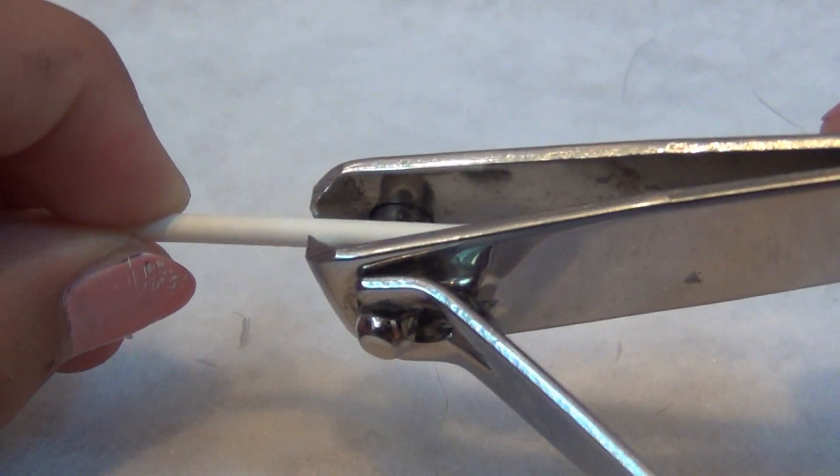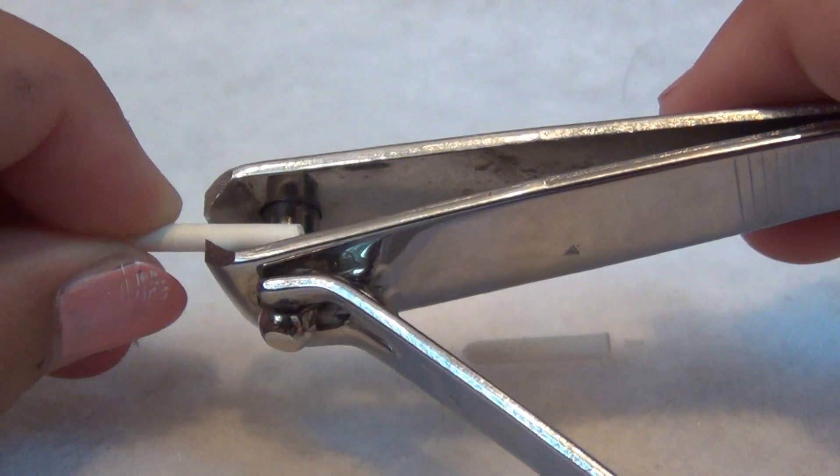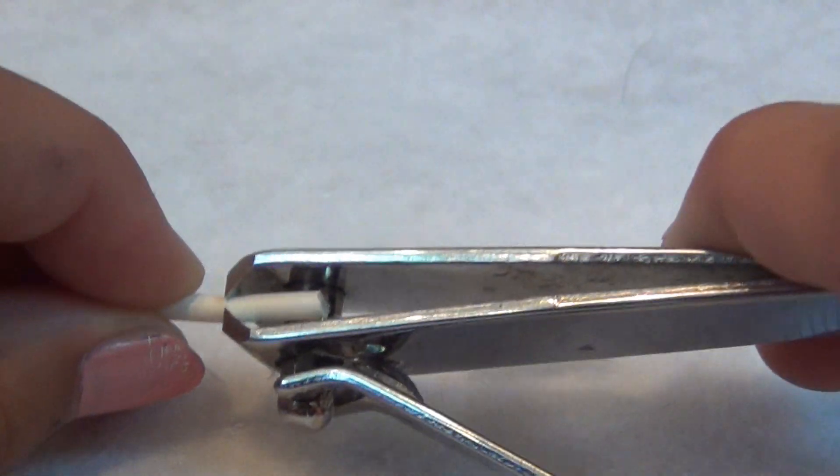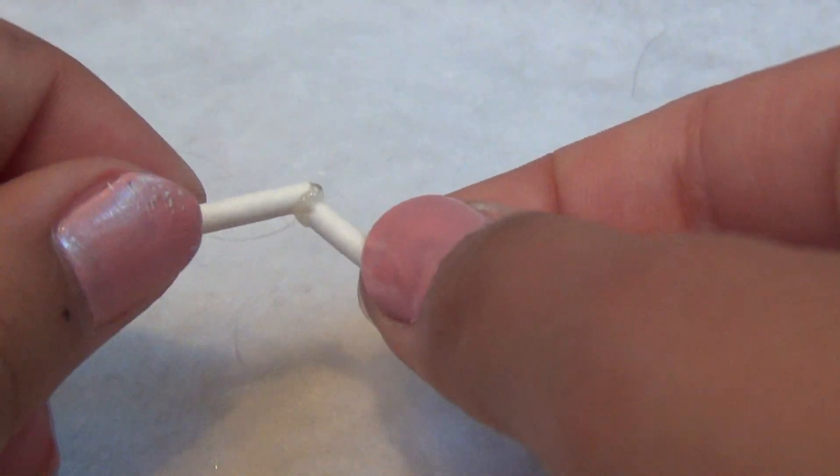Take your nail clippers and your cotton swab and cut two pieces. One smaller than the other. Glue them together to form a right angle.